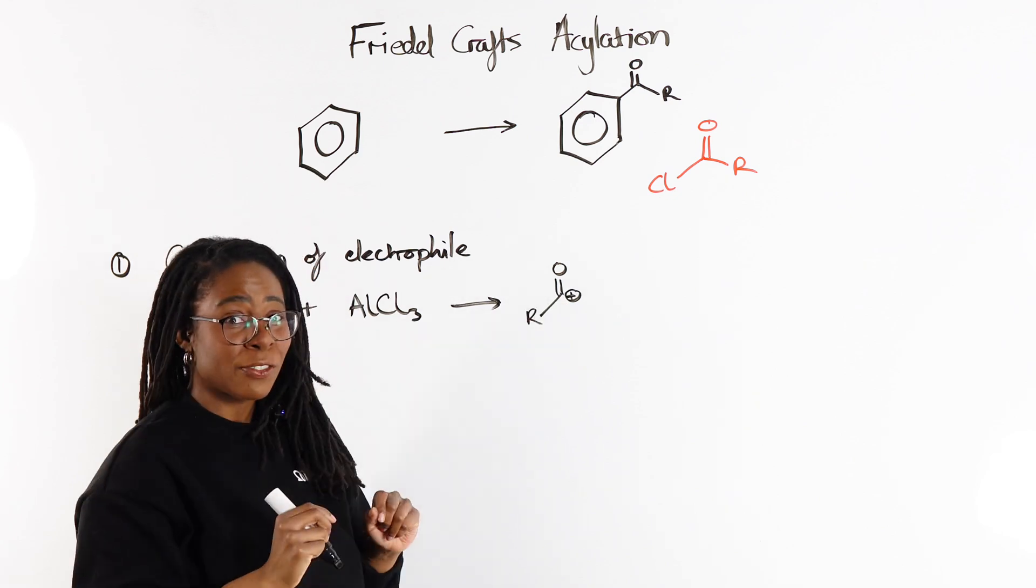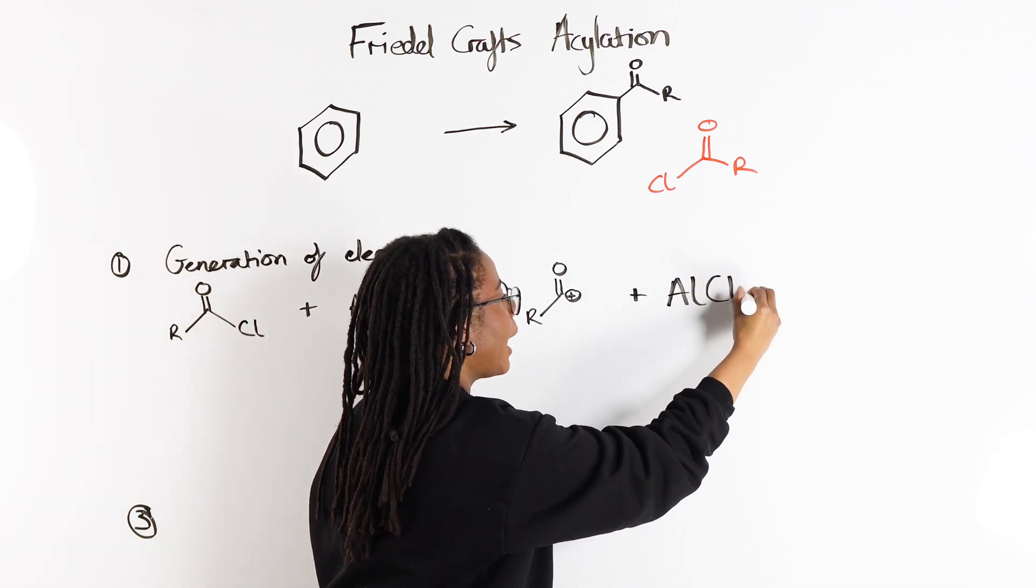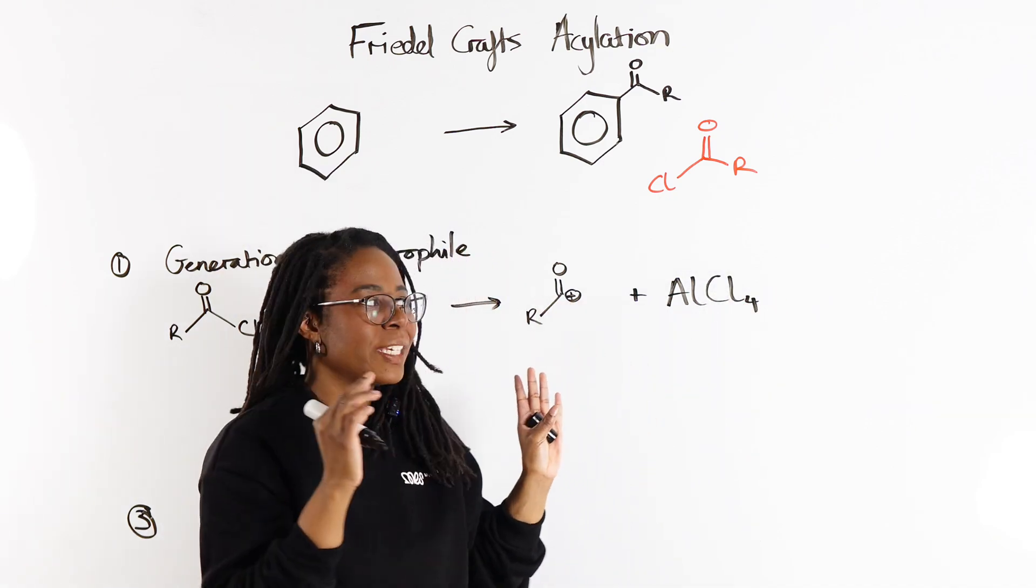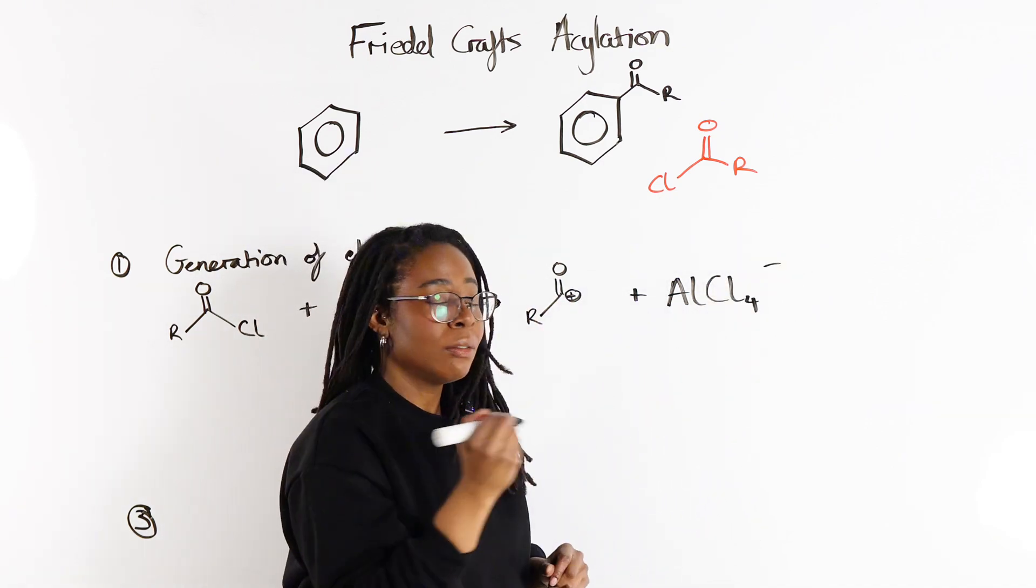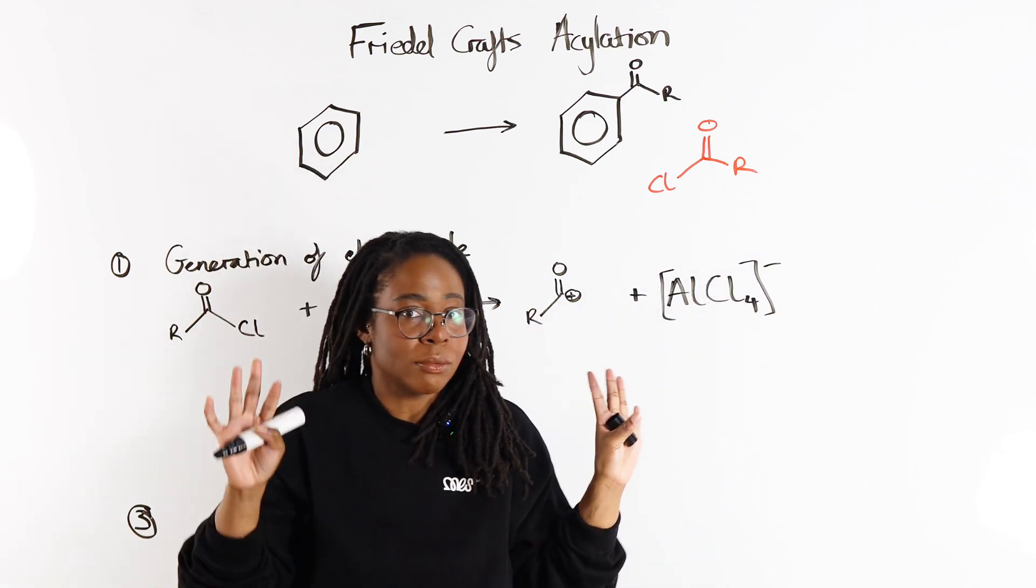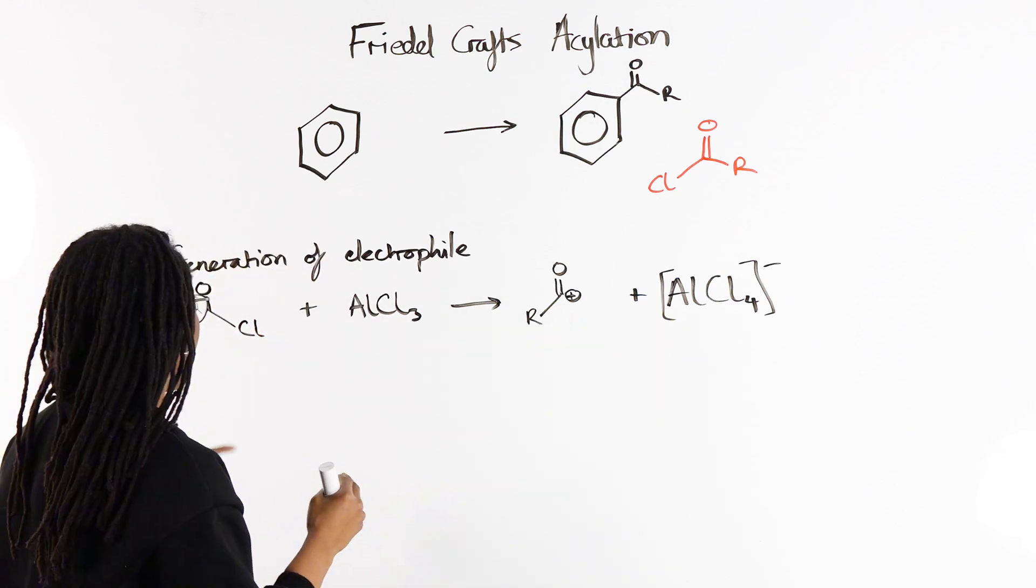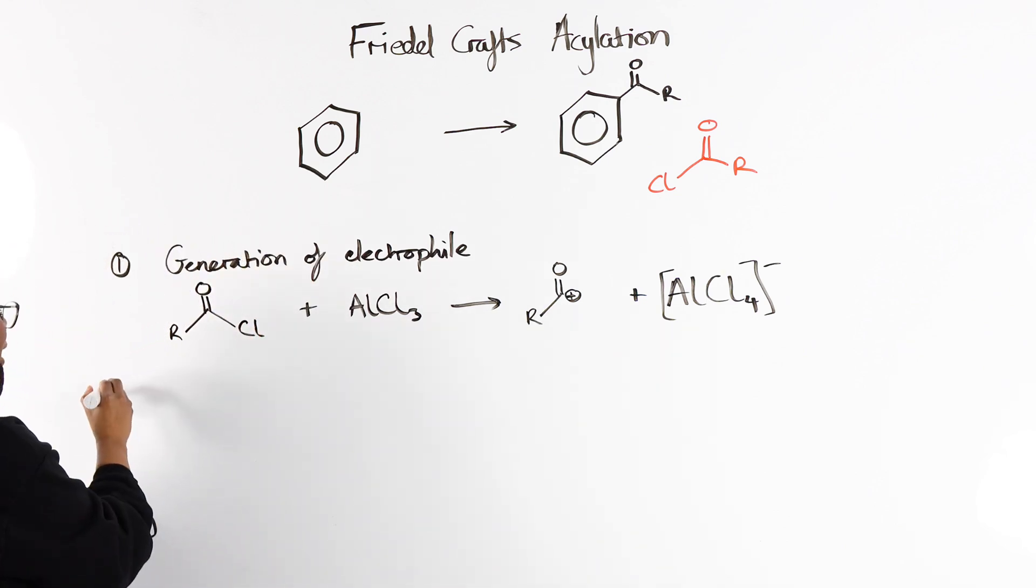So this carbon has got a positive charge. And AlCl4 with the whole thing with a negative charge. We can put the minus here or we can put this whole thing in square brackets and put the minus on the outside. Now we've got our electrophile. Now we can actually carry out our mechanism.